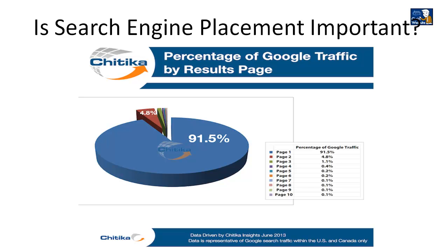I want to show you some statistics and why it's so important to be on the first page and at a particular position on it. This is a chart from Chitika, which is an ad platform similar to Google AdWords. Page 1 gets about 91.5% of the traffic. Page 2 gets about 5%, and all the other pages take the bits and scraps left over. If you're not on the first page, you're missing 90% of the traffic — that's where almost everybody goes.